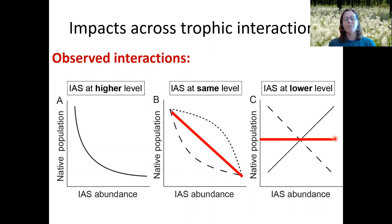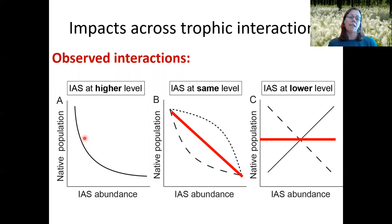What are the management implications? If you're dealing with an invasive top predator or mesopredator, you should watch for rapid declines associated with introduction of that species. Catching them early — when dealing with vertebrates or herbivorous insects — is really important because you're going to have a rapid decline in native species populations associated with that invasion.